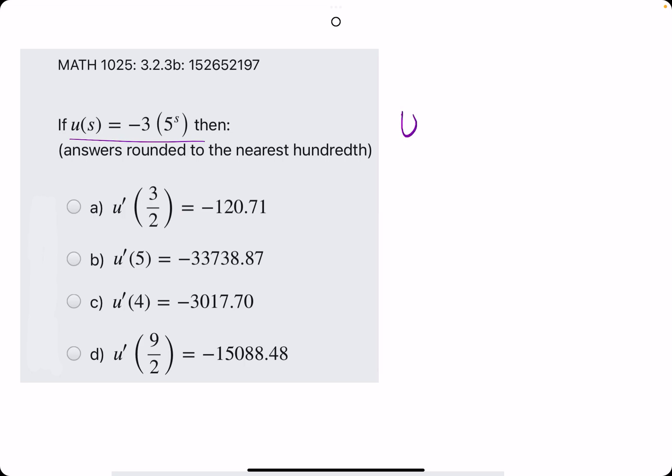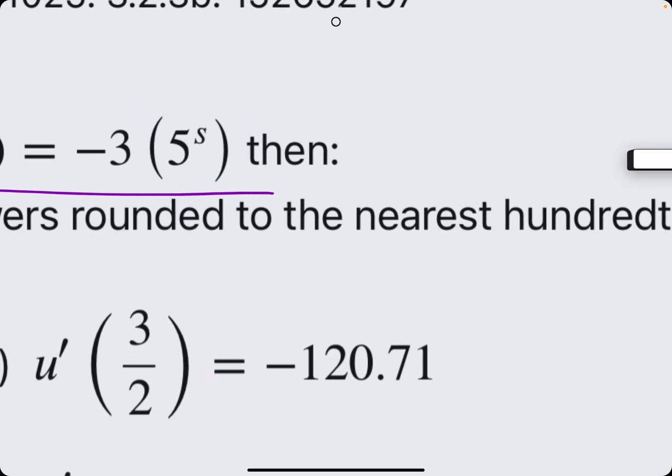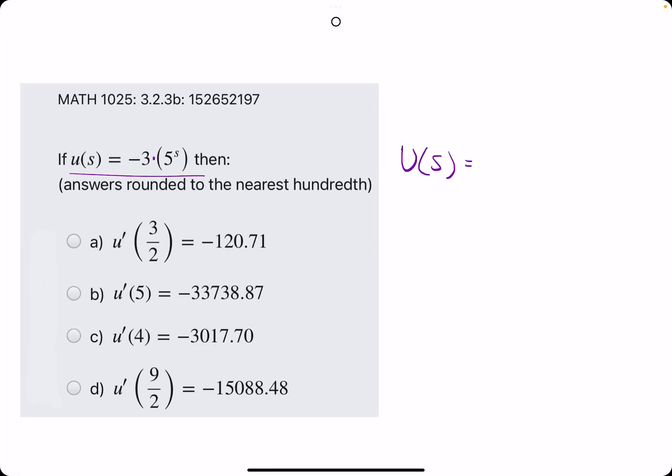So this is a type of function where we will basically just find the derivative of the main piece, like usual, and then because we have a negative 3 coefficient to this main piece, that coefficient, negative 3, will carry over into the derivative.